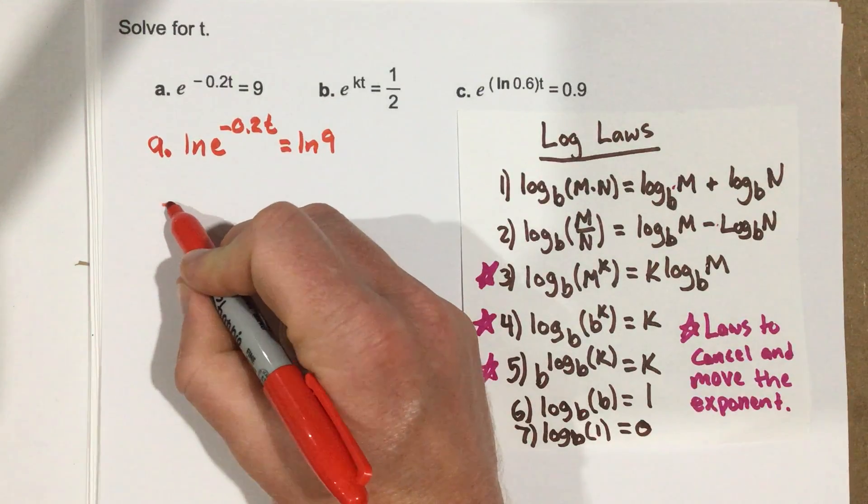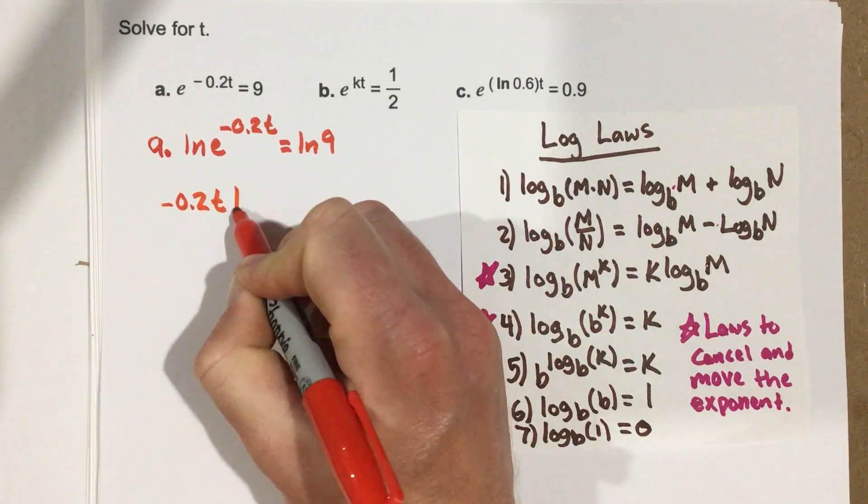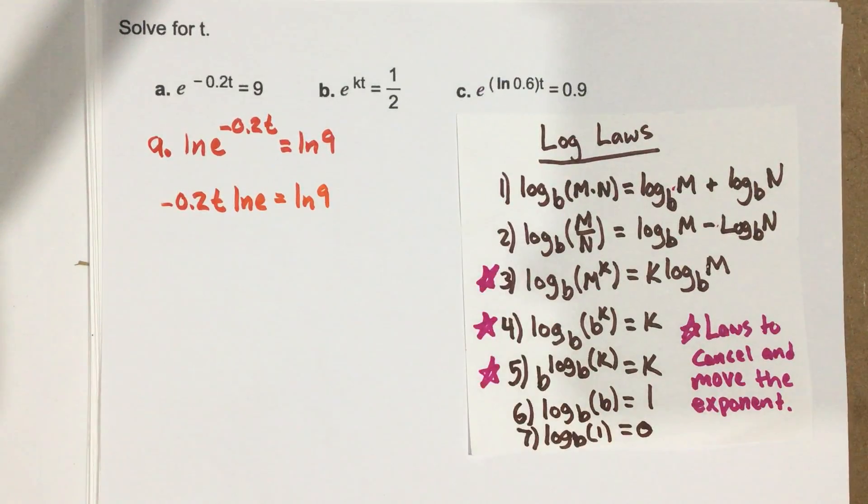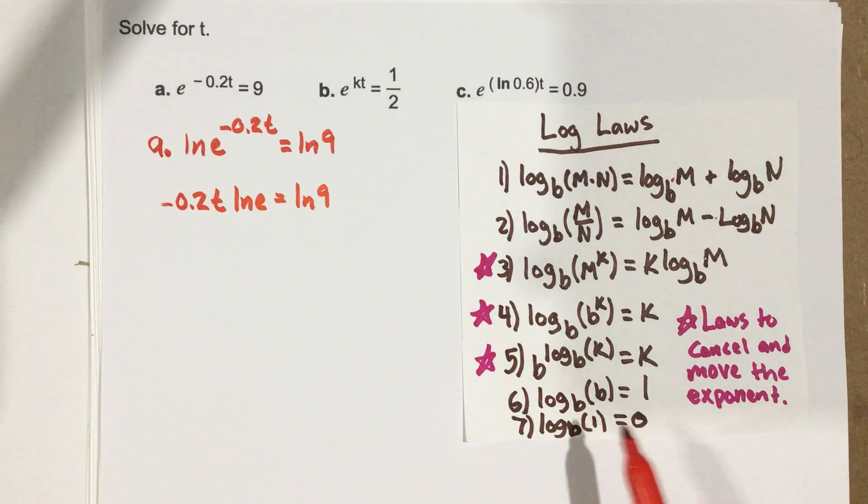So that's going to be negative 0.2t natural log e equals natural log 9. Now I can use another property here that says if I have log base b of b, it equals 1.